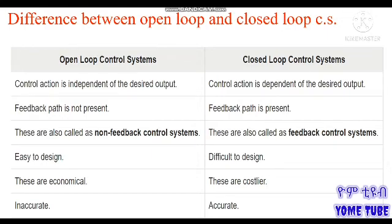The difference between open-loop and closed-loop control systems: in an open-loop system, the control action is independent of the desired output. In a closed-loop system, the output is dependent on the set point. Feedback is not present in the open-loop control system. In the closed-loop system, you can see the feedback path. The open-loop system is also called a non-feedback control system.